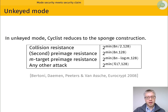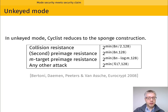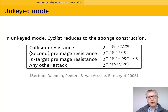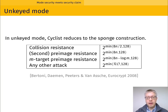A cyclist object can be initialized in either unkeyed mode for hashing or keyed mode. In unkeyed mode, cyclist is actually equivalent to the sponge construction. So with 256 bits of capacity, we can reach a security level of 128 bits against any attack, unless easier against a random oracle.